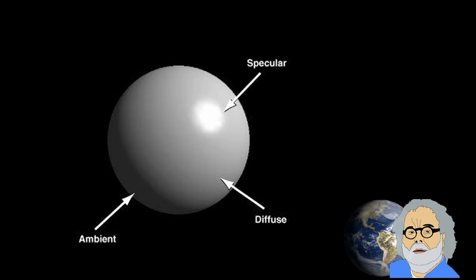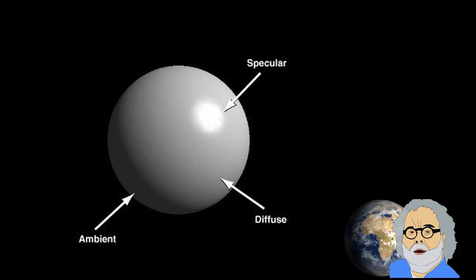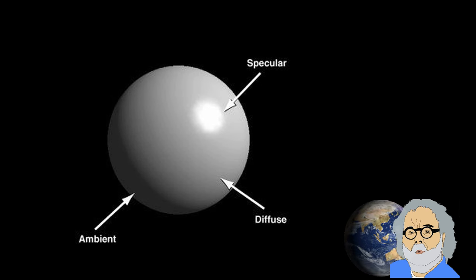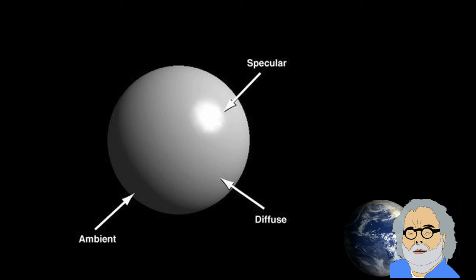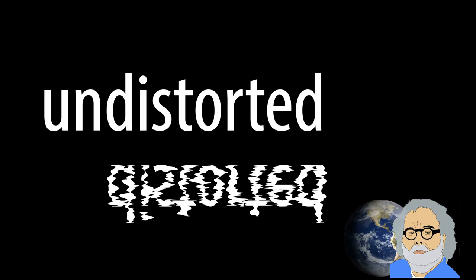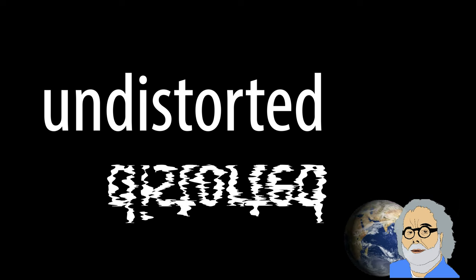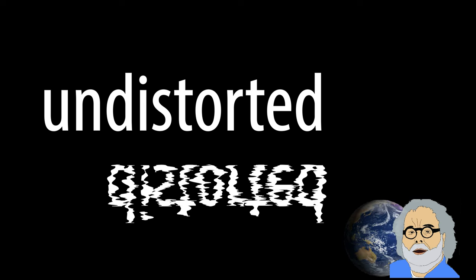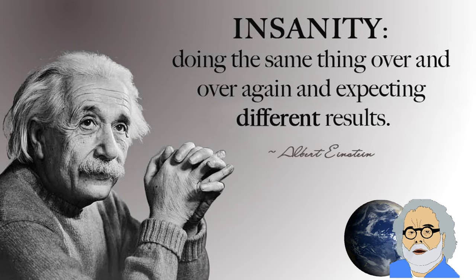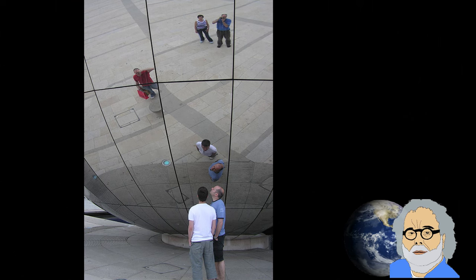First of all, Witsit doesn't know the difference between specular and diffuse reflection. He doesn't even know what specular reflection or diffuse reflection is. He thinks it means the difference between an undistorted and a distorted reflection — and it isn't. But we are used to Witsit making these kinds of mistakes. However, this argument made me think about the reflection on a curved surface.